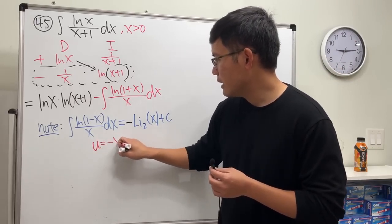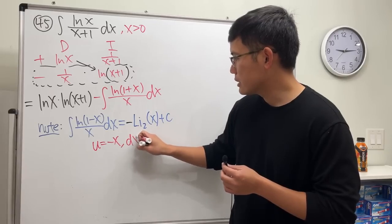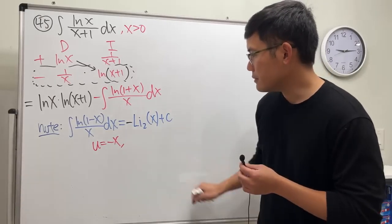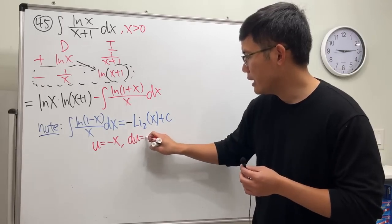equal negative x. And you see, du will be negative dx.